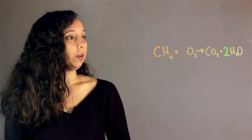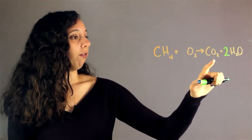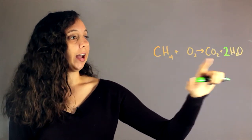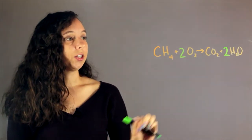Now finally we have O2 here, so two on the left side and one, two, three, four on the right side. This is not balanced. Now we have to add a two to oxygen. So this is how we balance equations.